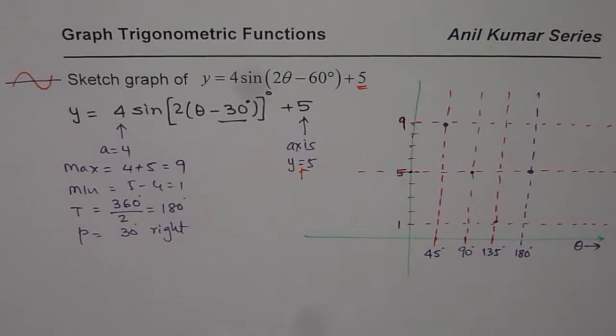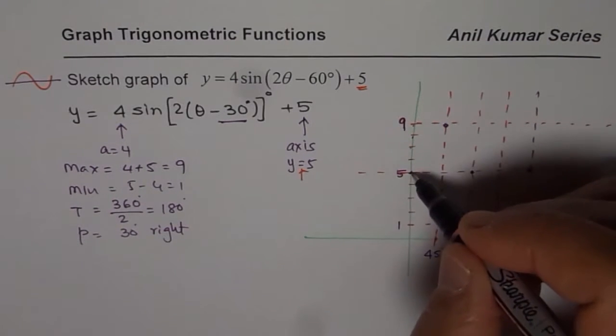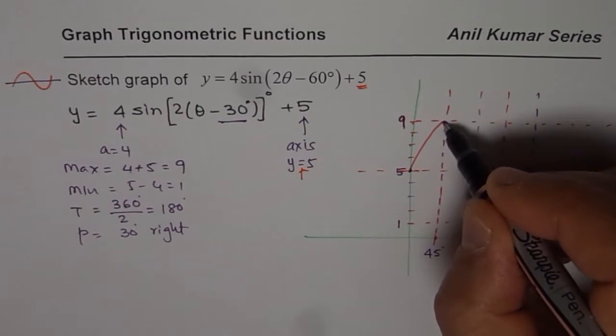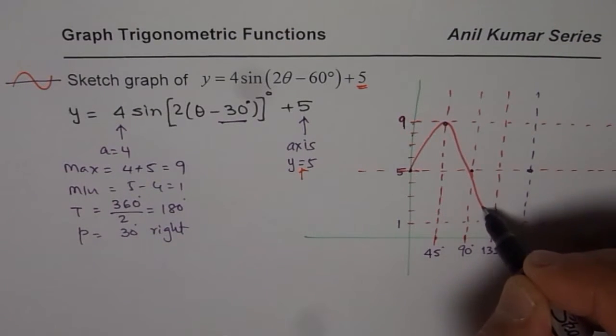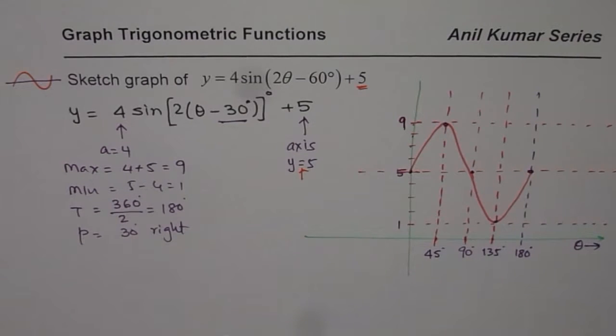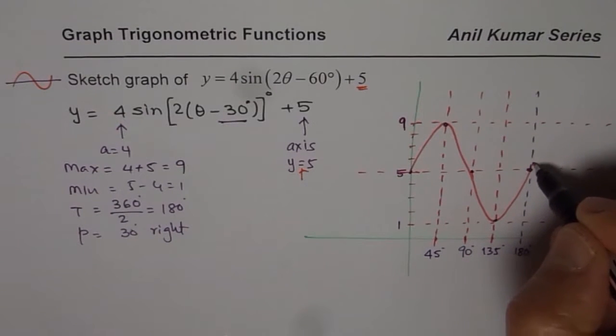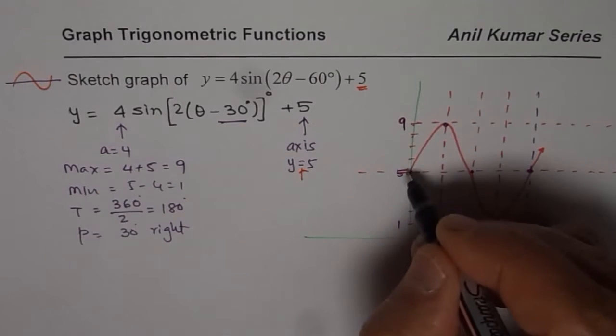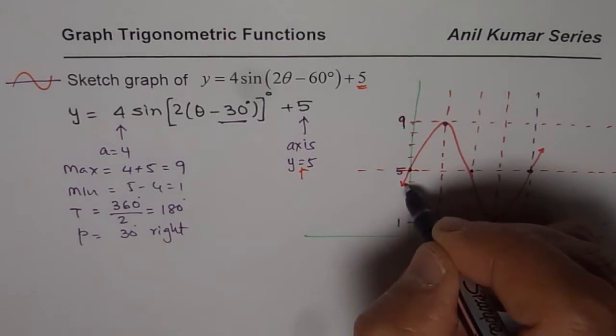Once I join them, I would join them with a light color so we could actually draw the final graph with a darker shade. We can just join it like this. That is one wave of sine. And of course sine graph we can repeat.